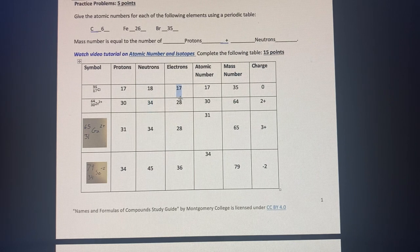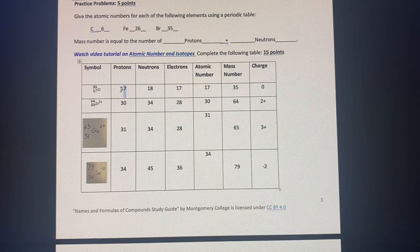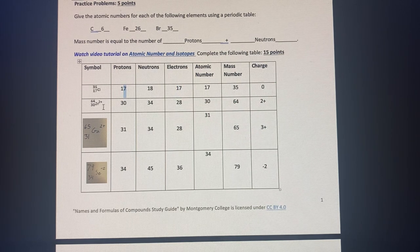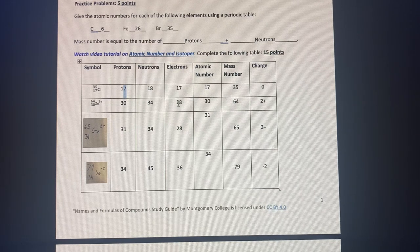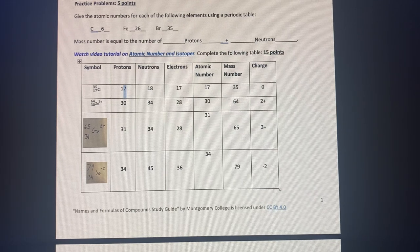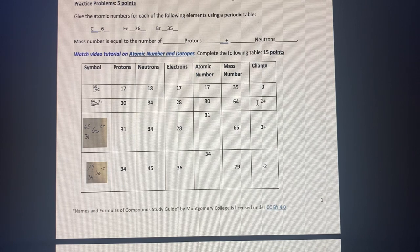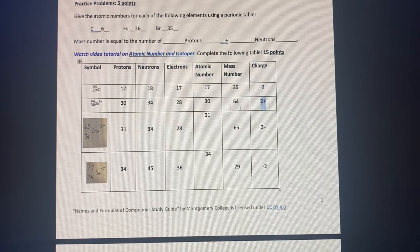The electrons will be equal to the protons for the chlorine because it's a neutral charge. For the zinc, it's a plus two. Therefore, there are two less electrons because electrons have that negative charge that we talked about earlier, which means that the overall charge is two plus.